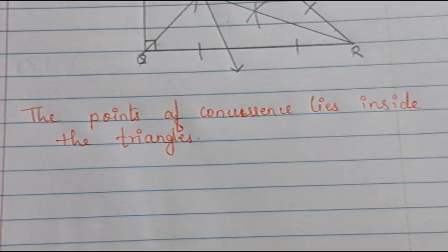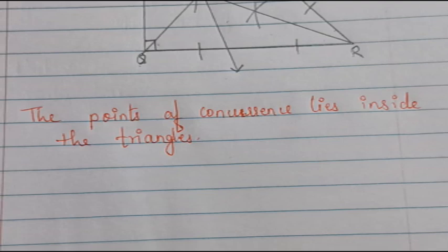So for question number three: first draw the obtuse angled triangle, then take the angle bisectors, then find the point of concurrence. Then draw the right angled triangle and find its point of concurrence as well.